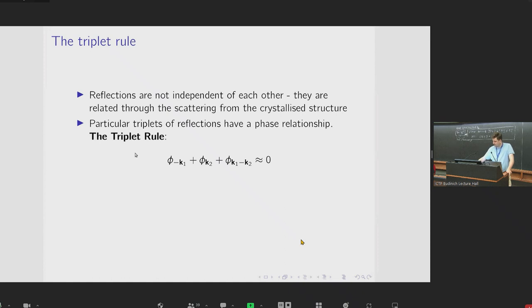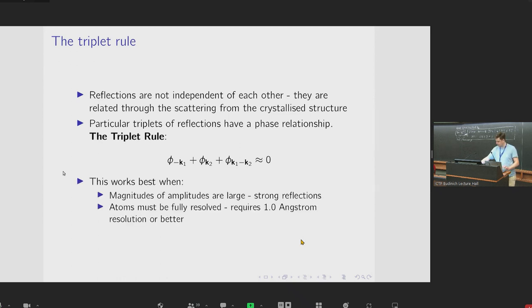And in particular, there are specific triplets of phases that have an approximate phase relationship. So for triplets of reflections whose reciprocal space coordinates are related in the way shown here, basically, if the reciprocal space vectors add to zero, then those three phases should add approximately to zero. So this relationship holds best when some conditions are met. So it holds best when the amplitudes are large, that is to say, when the reflections are strong. And it also holds best when the reflections mean that the atoms are fully resolved with a resolution of around one angstrom or better.